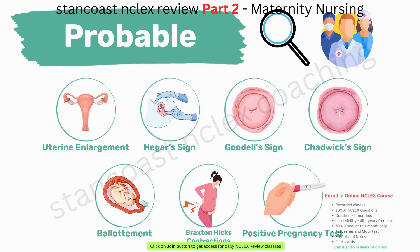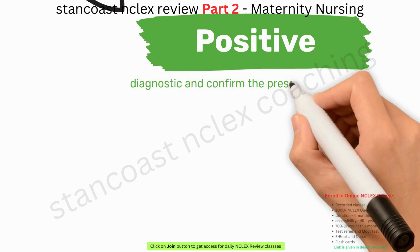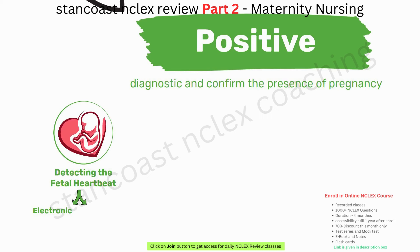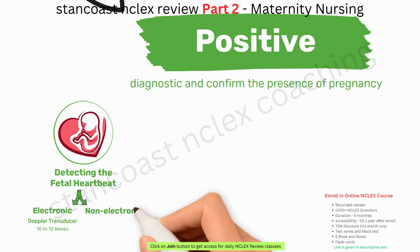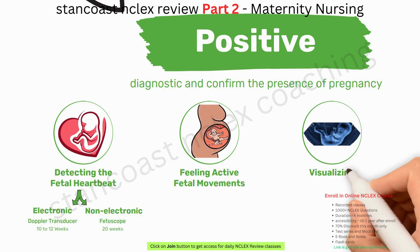Positive signs are diagnostic and confirm the presence of pregnancy. These signs include detecting the fetal heartbeat using electronic devices like a Doppler transducer at 10 to 12 weeks, or a non-electronic fetoscope at 20 weeks, feeling active fetal movements, and visualizing the fetus through radiography or ultrasonography.